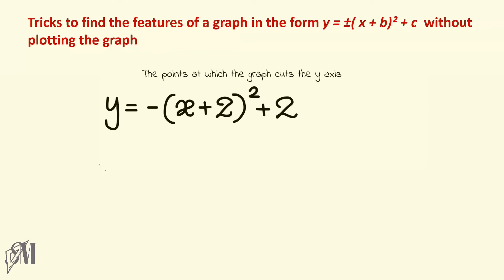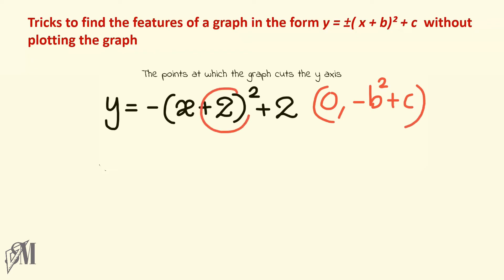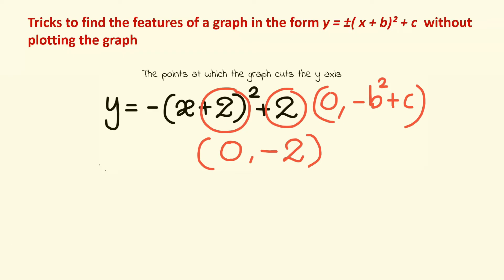Look at this example — here the square is negative, hence the graph will have a maximum. The coordinates of the point at which the graph cuts the y-axis is given by (0, minus b squared plus c). Here b is 2 and c is 2. Therefore the coordinates will be: minus 2 squared is minus 4, plus 2 is minus 2. Therefore the graph cuts the y-axis at (0, minus 2).